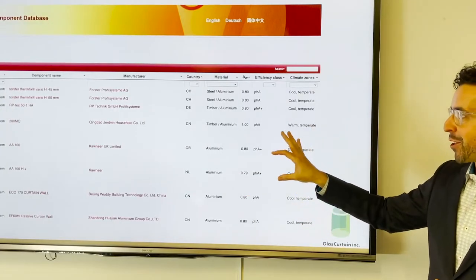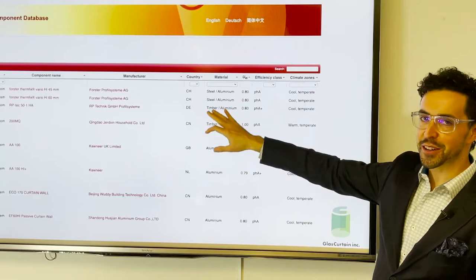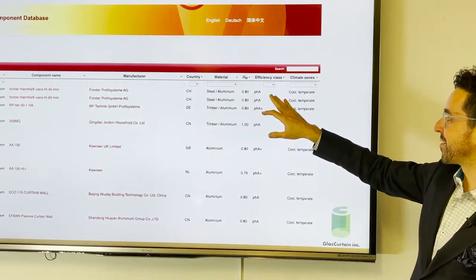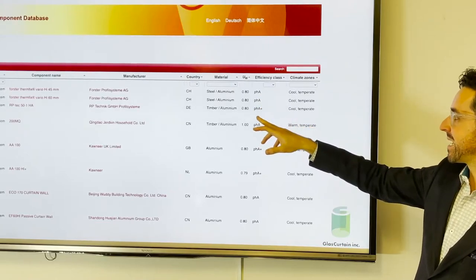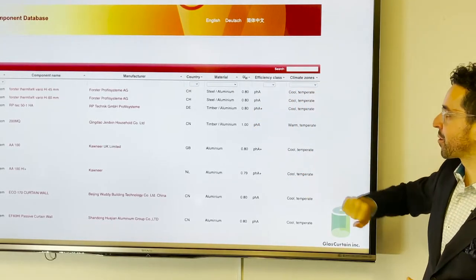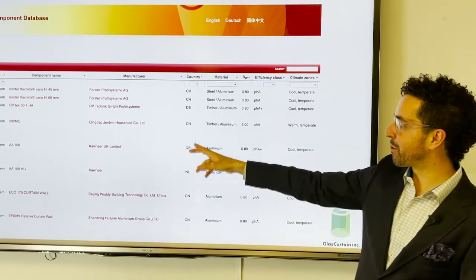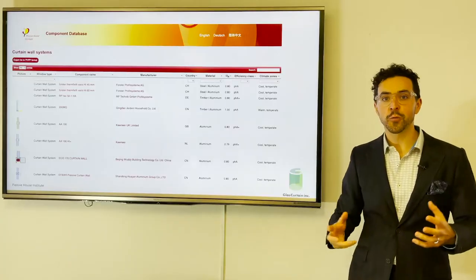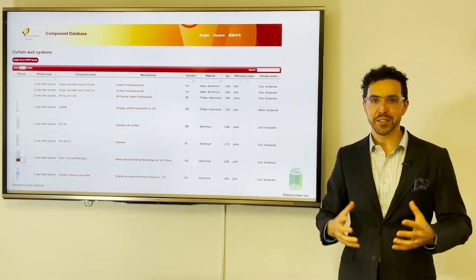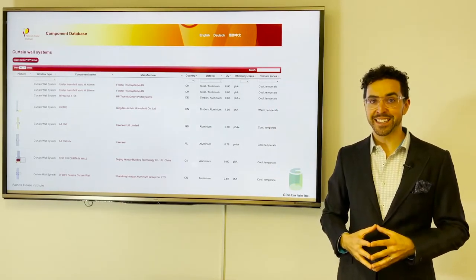Before Glass Curtain came along, under the material category, there was no fiberglass option under the efficiency class. There were also other PHA Plus systems you can see, but there were no other climate zones. And we were also the first Canadian curtain wall system. So they had to add a few more categories for us, but that's just what happens when you're leading the way.